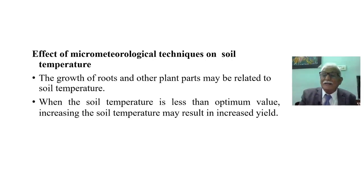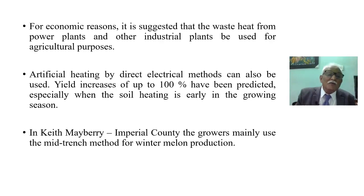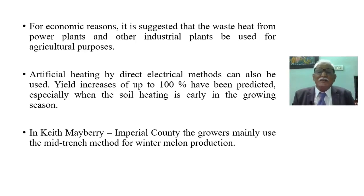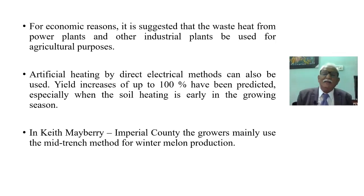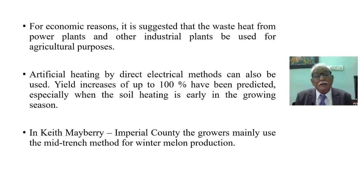For economic reasons, it is suggested that waste heat from power plants and other industrial plants be used for agriculture purposes. Artificial heating by direct electrical methods can also be used for agriculture. Yield increases of up to 100 percent have been predicted, especially when soil heating is applied early in the growing season in temperate countries.